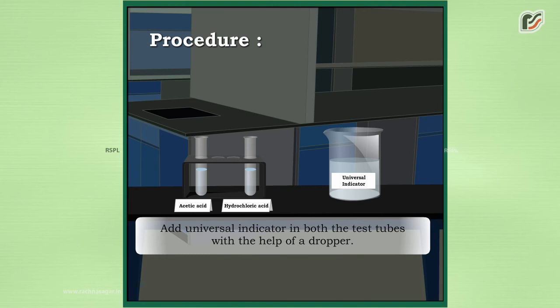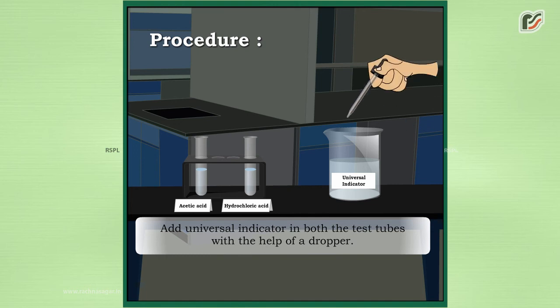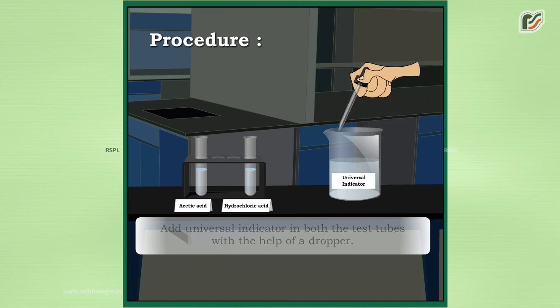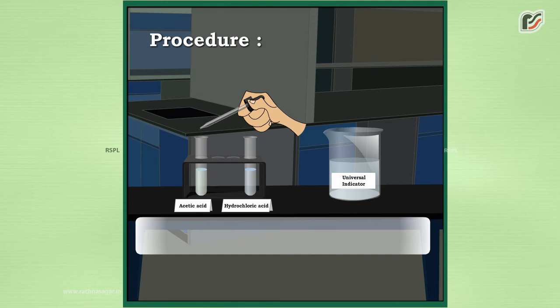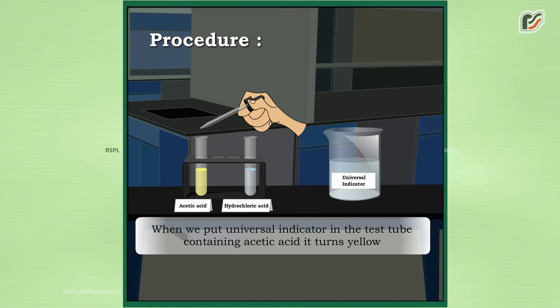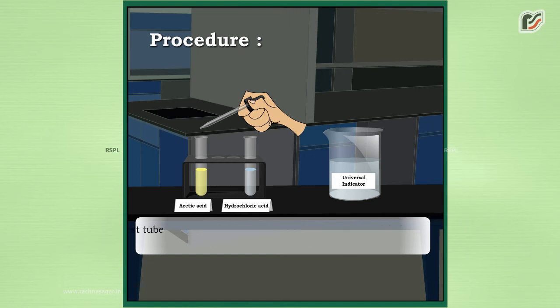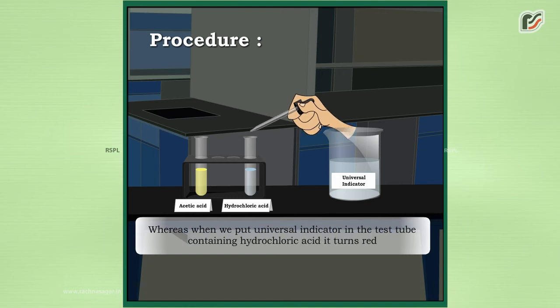Now remove the litmus paper and add the universal indicator in both the test tubes with the help of a dropper. When we put universal indicator in the test tube containing acetic acid it turns yellow, whereas when we put it in the test tube containing hydrochloric acid it turns red.